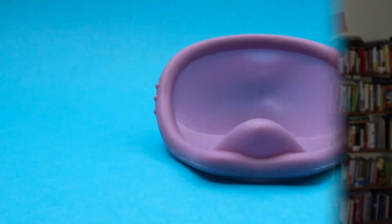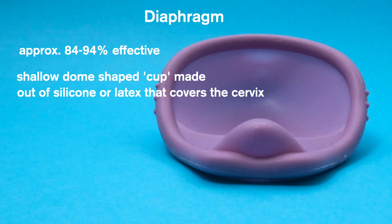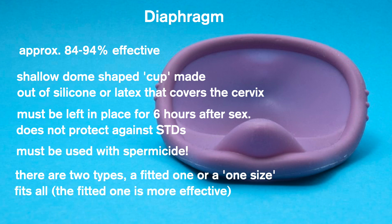The next form of barrier method is the diaphragm. The diaphragm is about 84–94% effective. It's dome-shaped and made out of silicone or latex. It must be left in place for six hours after sex and should be used with spermicide. There are two types: a fitted one or a one-size-fits-all. To make it more effective, you want the fitted size, which you would be fitted for by a healthcare professional.